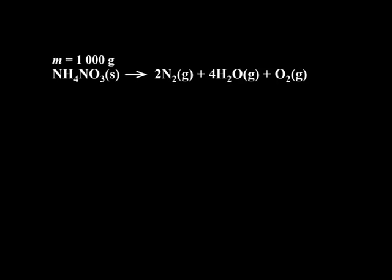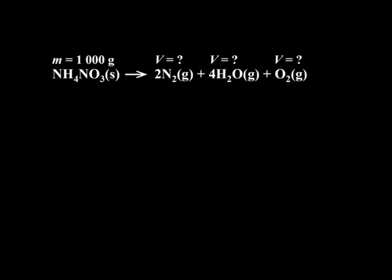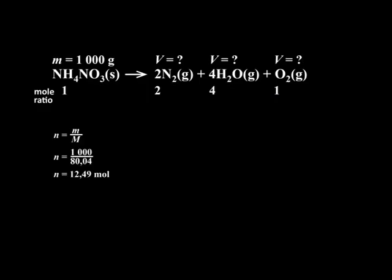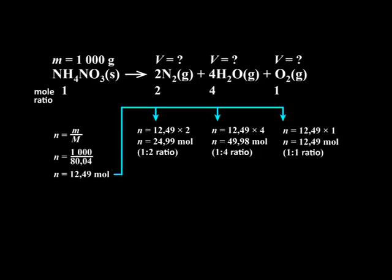First, we fill in the information given and confirm that the equation is balanced. We were told that we have one kilogram of ammonium nitrate, which has the formula NH4NO3. We want to determine the total volume of gases produced in the equation. From the balanced equation, we determine the mole ratio, which will be 1 : 2 : 4 : 1. Now we use the equation n = m/M to determine the number of moles of ammonium nitrate that we start with. Next, we use the mole ratio to determine the number of moles of gas produced. We get 24.99 moles of nitrogen, 49.98 moles of water vapor, and 12.49 moles of oxygen.